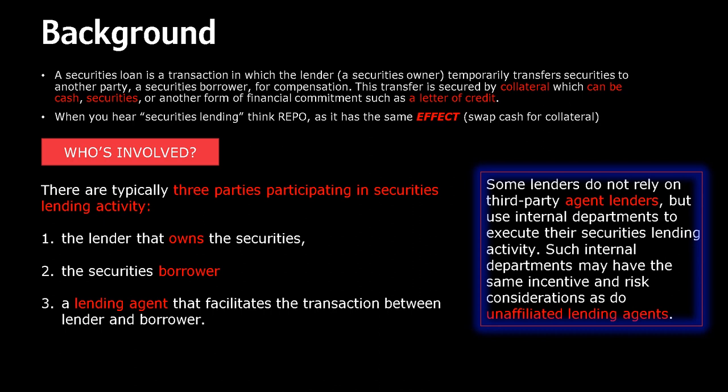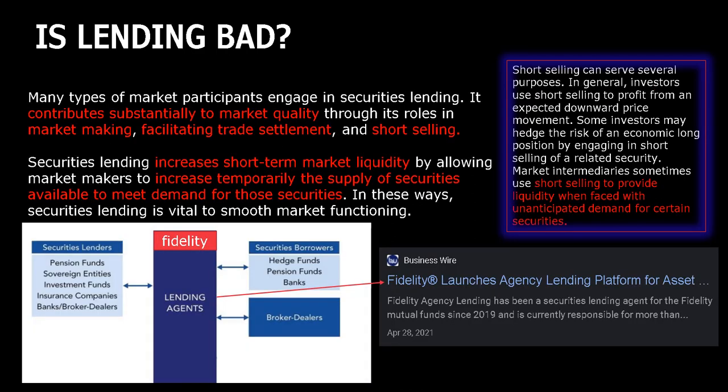Agent lending basically makes it a lot easier for the borrower and the lender to connect and make a transaction happen because they have the third-party intermediary. Which means if you see an agent lending entity massively lending shares, there must not be a lot of shares left in that particular security. Is lending bad? That depends. Many types of market participants engage in securities lending. It contributes substantially to market quality, especially liquidity, through its roles in market making, facilitating trade settlement, and especially relevant lately — short selling.